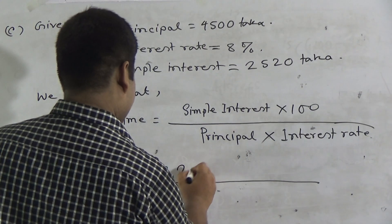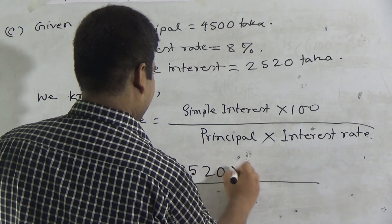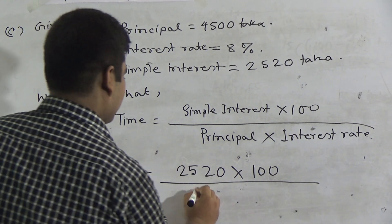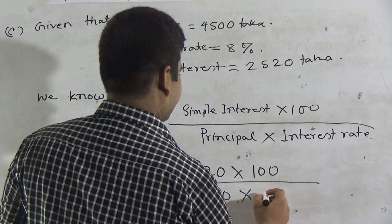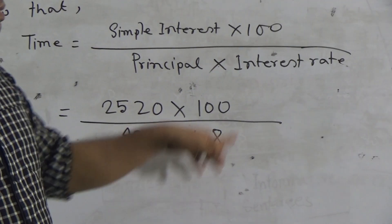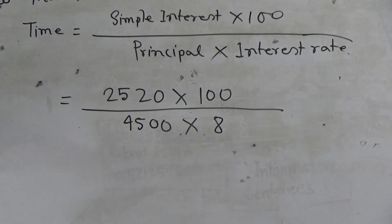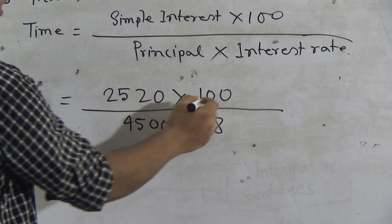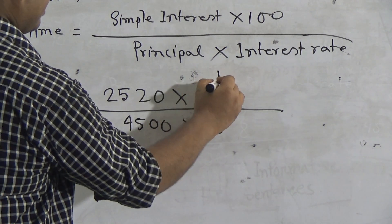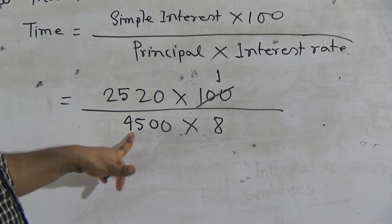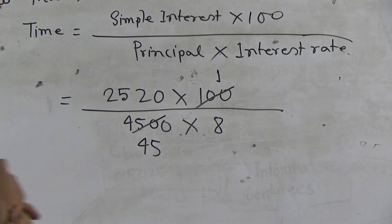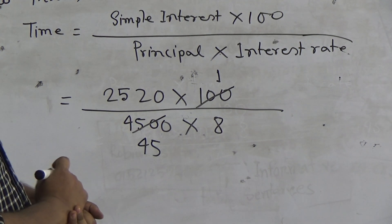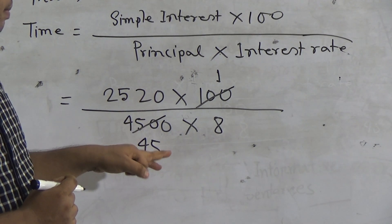The formula for time is: time equals simple interest multiplied by 100, divided by principal multiplied by interest rate. Now we put the values: simple interest is 2520 Dhaka, multiplied by 100, divided by principal 4500 Dhaka, multiplied by interest rate 8%. We do not write percent because for that percent we give 100. Now we cut 4500 by 100: dividing 100 by 100 gives 1, and dividing 4500 by 100 gives 45.